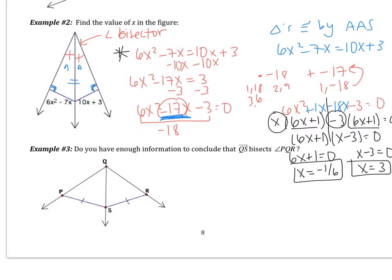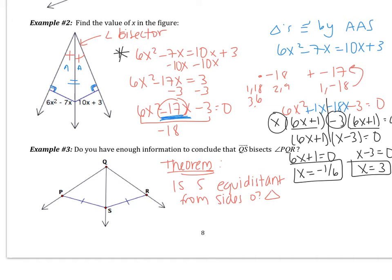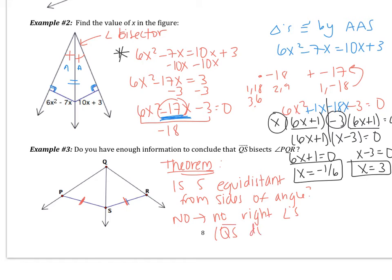Example 3 says: do you have enough information to conclude that QS bisects angle PQR? Two ways to think about it. Thinking about the theorem, I need to know if point S is equidistant from the sides of the angle. I notice I have congruent markings, but I'm missing the right angles. So S is not equidistant — no right angles — which tells us that QS does not bisect.